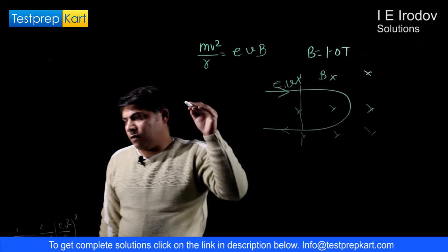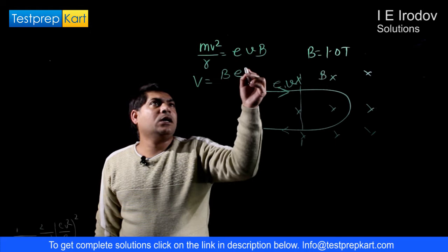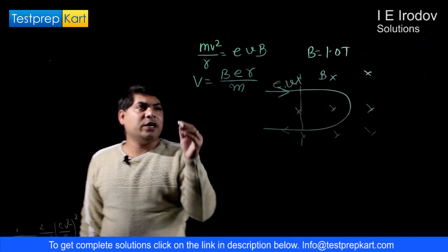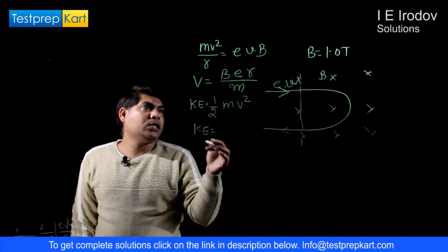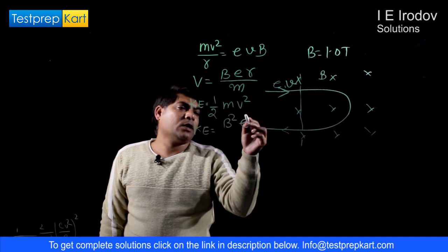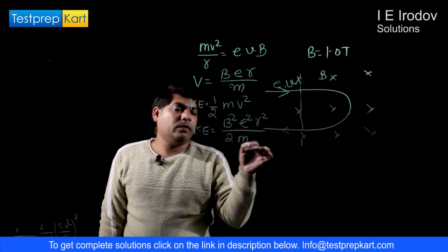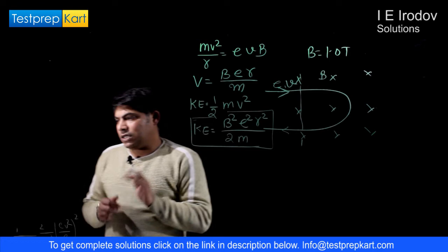From there we can get the expression of speed, that is Ber/m. So from here we can calculate the initial energy of the proton. Initial energy is half mv². So it will give us the expression: if we put v equals Ber/m, this is B²e²r²/(2m). Initial kinetic energy. So this is our first expression.